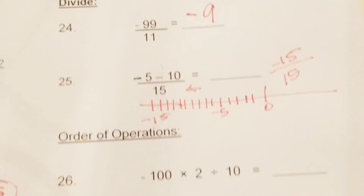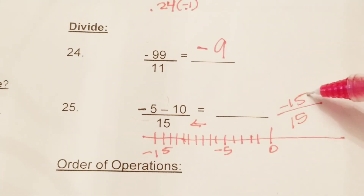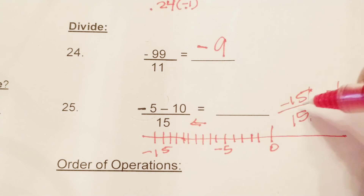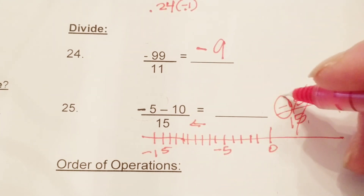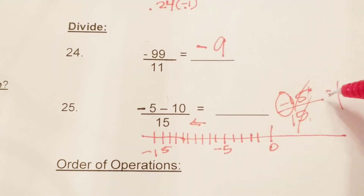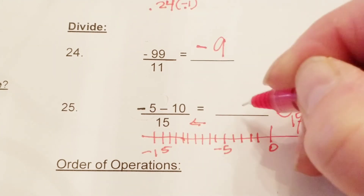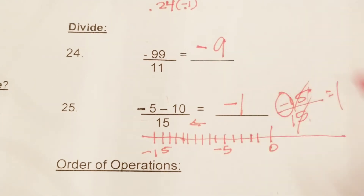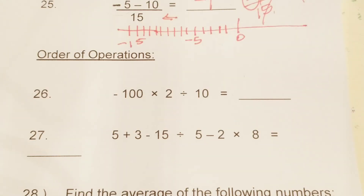We know that anything divided by itself is 1 — those cancel — but we still have a negative, and a negative divided by a positive is a negative. So the answer is negative 1.